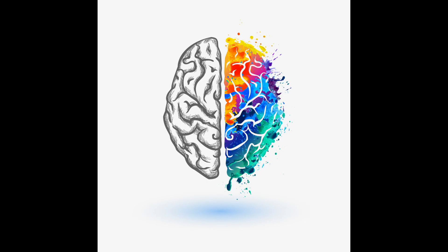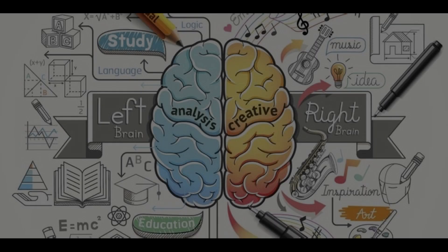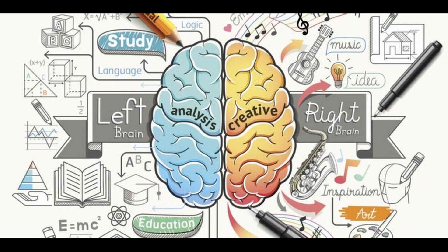In a perfect world where everyone would be 50/50, people would argue much less and be more understanding. But the fact is that some people are more left-brain dominant and some are more right-brain dominant. I prefer the term 'imbalanced' — and I'm not talking 55/45; it's more like 65/35 or even more extreme than that.